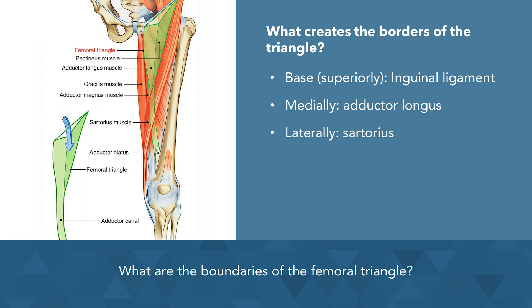Next, let's look at the floor. This one is a little bit harder. The floor is gutter shaped and muscular. From lateral to medial, it's created by the iliacus, psoas major tendon, and pectineus. The apex is created by the meeting point of the medial edges of the adductor longus and sartorius.